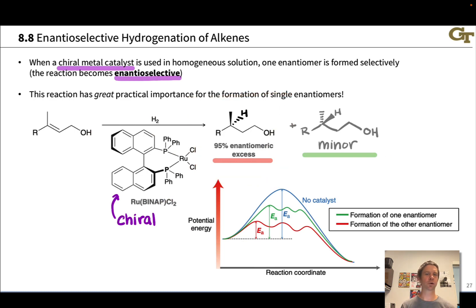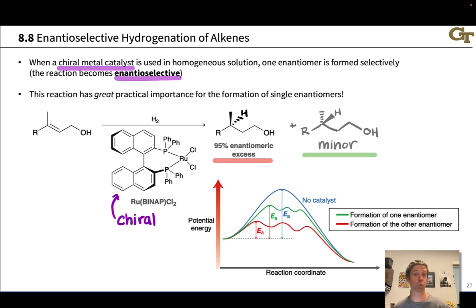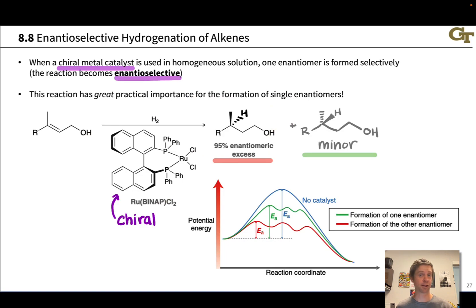In Chem 2311 we're not going to worry about the mechanistic and steric arguments explaining why one isomer is the major product. Enantioselective hydrogenation is mentioned here because it is one of the most common and important methods for establishing new stereocenters with very high enantioselectivity — high selectivity for a single configuration of product.